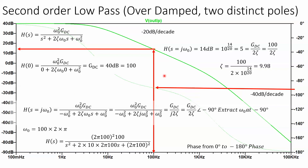Which phase do we use — -45°, +45°, +90°, or -90°? We substitute j·omega into the transfer function. In this example the gain at j·omega-naught is 14 dB. Continuing through the math, we find that the phase at omega-naught is -90°. So we come across at -90° (not -45°) and read 100 Hz. Omega-naught is 2π × 100 Hz. The DC gain is 40 dB or 100. We find the damping coefficient by reading the gain at omega-naught — 14 dB or 5 — and solving for the damping factor, which gives zeta = 10.